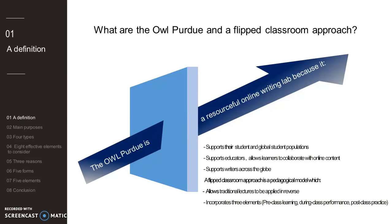The flipped classroom approach is basically a pedagogical model in which traditional lectures and homework are applied in reverse, allowing learners to collaborate with interactive online content to expand their learning. The framework is commonly applied through the incorporation of three elements.